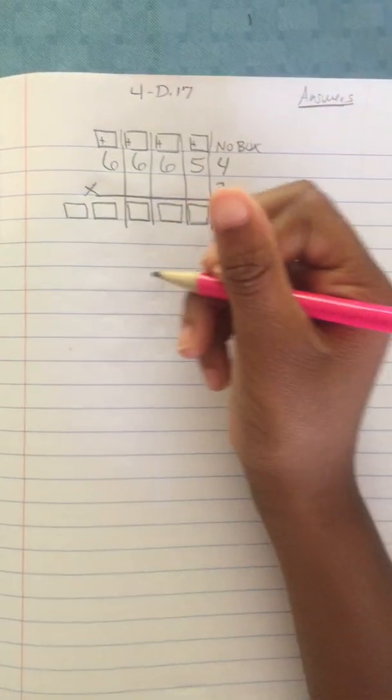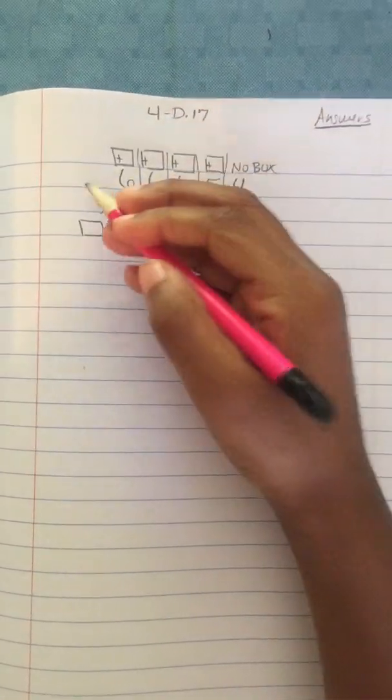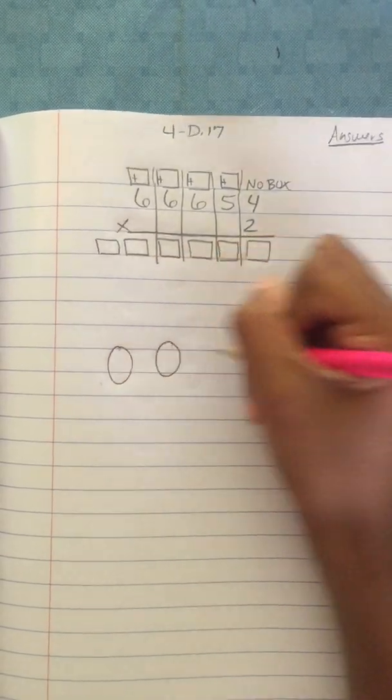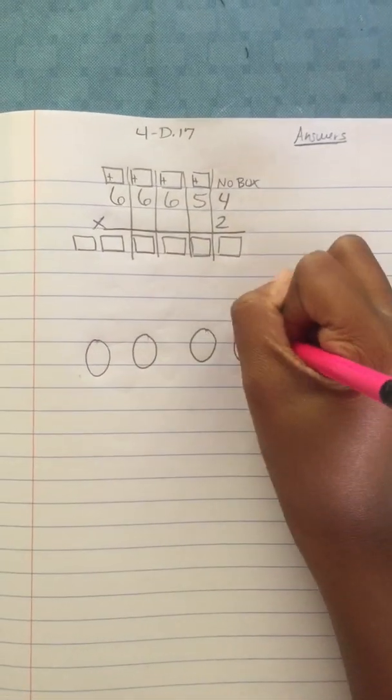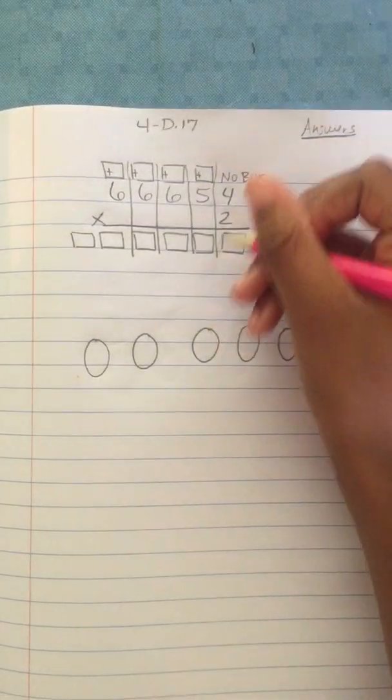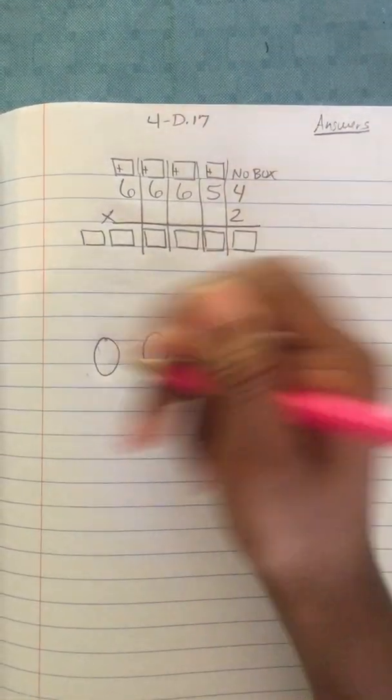So the two represents the two times tables. And I'll write six circles because I see six here. And I'll draw two tally marks in each circle.